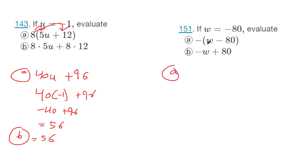I suspect the same thing is going to happen on A and B here. If you distribute this negative sign to everything inside the parentheses, that's negative W plus 80. And then you can plug in negative 80.